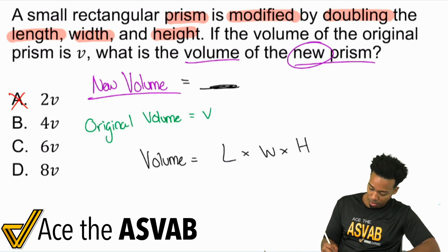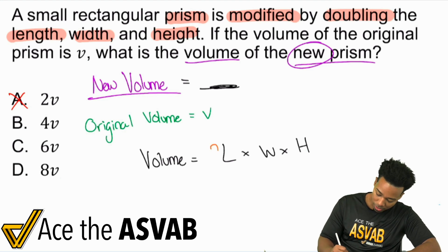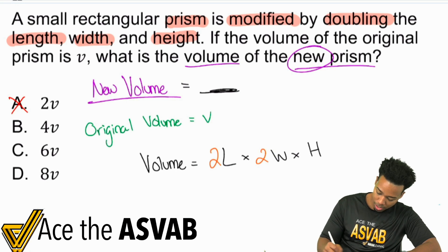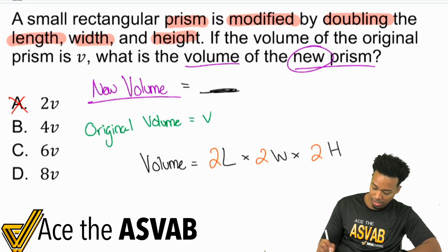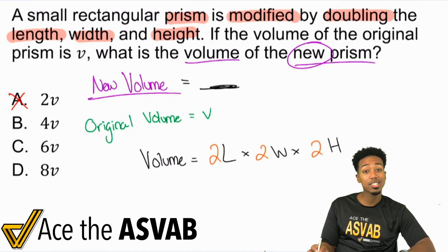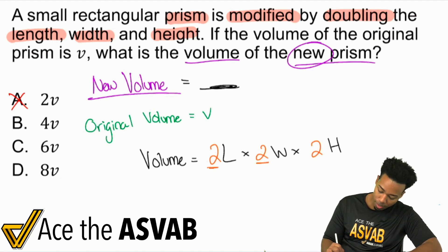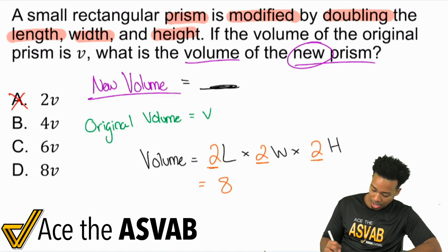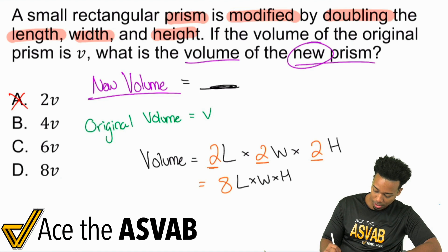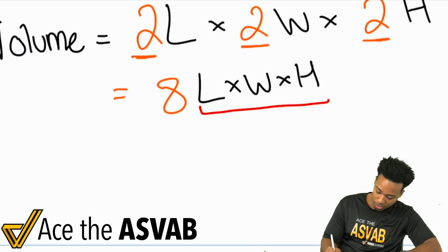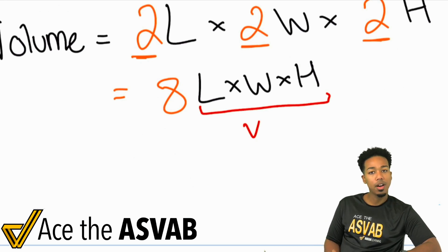But what we did was we doubled the length, we doubled the width, and we doubled the height. And so what that means for us, my party people, is this: we have double the length, we have double the width, and we have double the height. So we have to consider that because we doubled everything. And so if you double everything, well guess what? What's gonna happen is you have two multiplied by two, which is four, four times two is going to be eight.